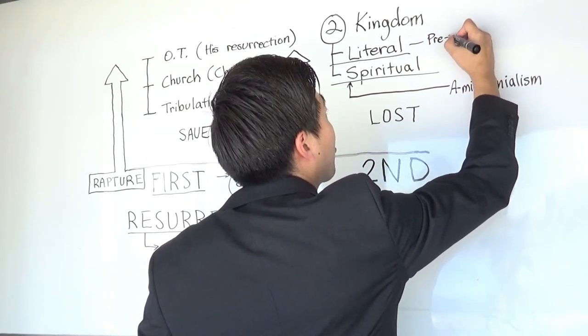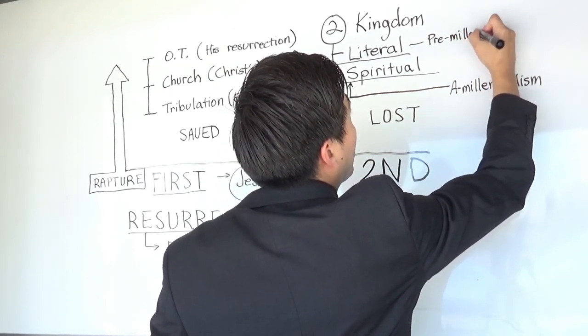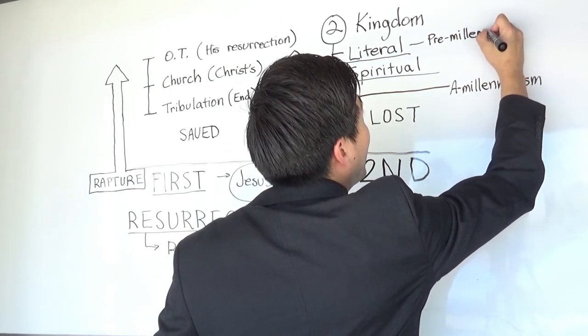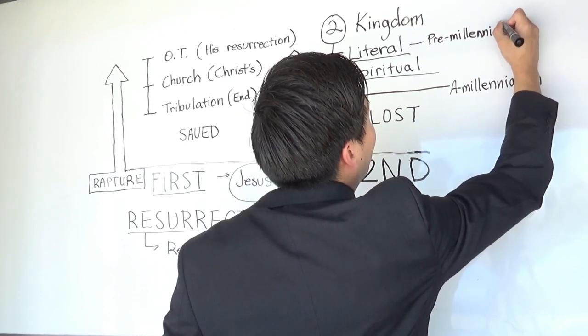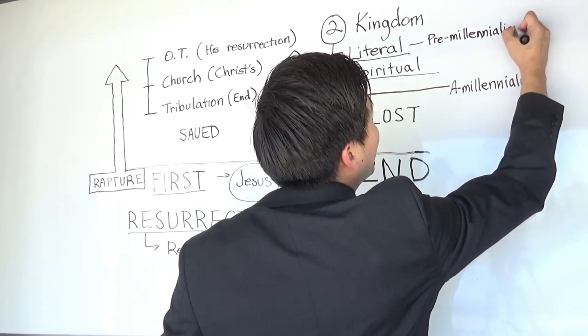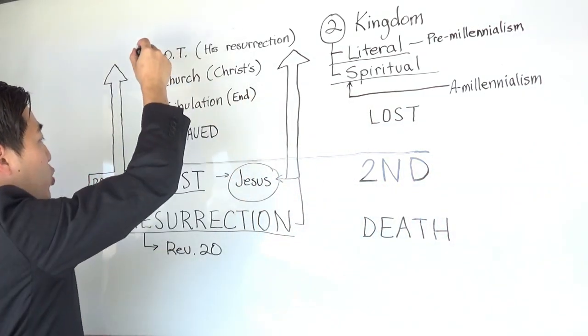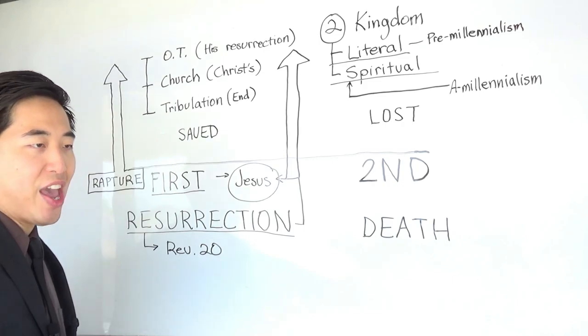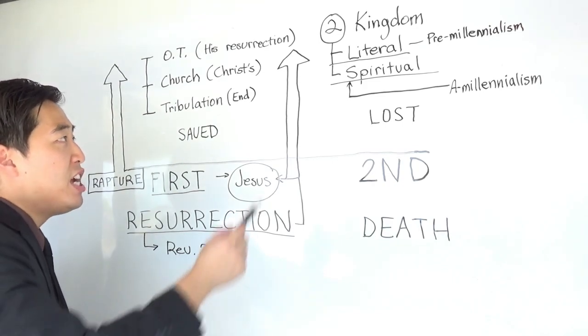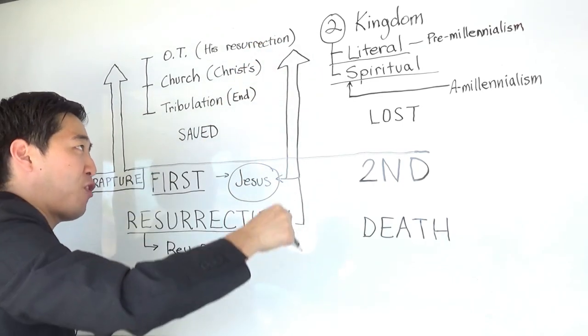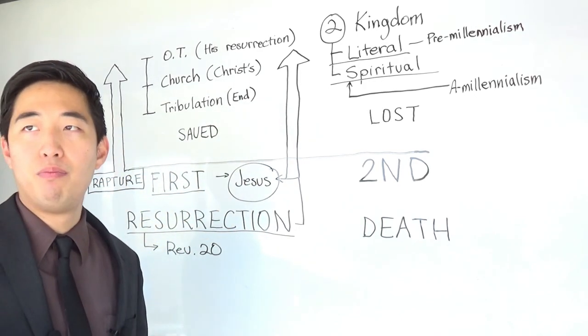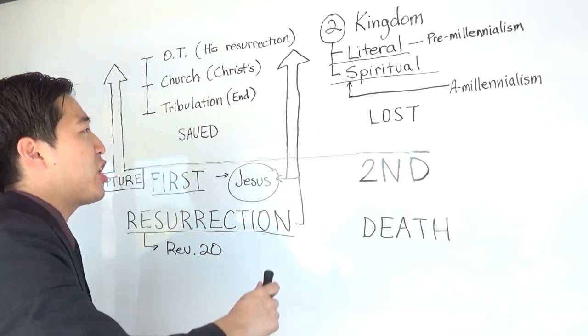Now, what is premillennialism, if you remember your Revelation study? Premillennialism, we teach that basically before the 1,000 year reign, that Jesus will be coming down and rapturing us to heaven. That's what we believe in. Jesus Christ has to come down first to set up the kingdom. So, that's what we teach and believe in.